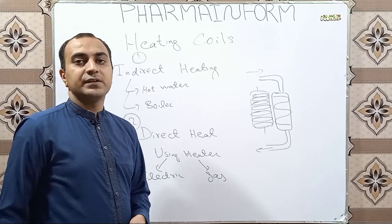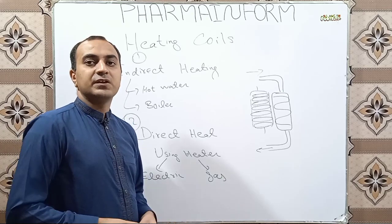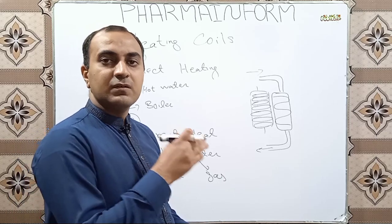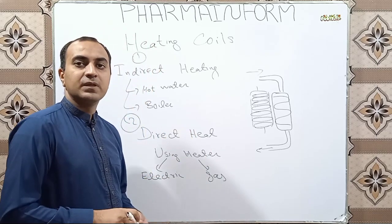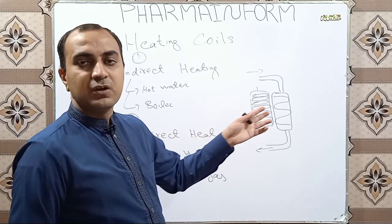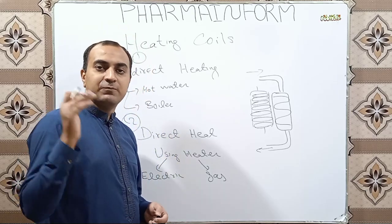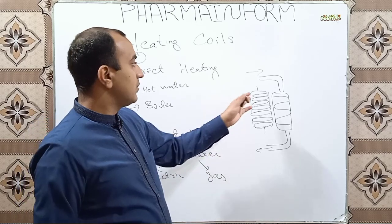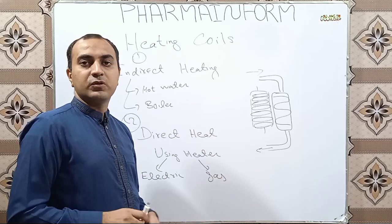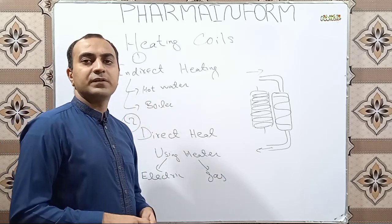Indirect heating means in this method the air is not directly heated. In this method, first we heat our water, and then hot water is circulated towards the coil where it circulates through the coil. When air passes through the coil over the hot circulated water, the air becomes hot.